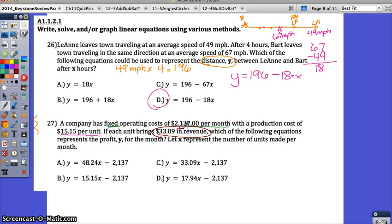If each unit brings $33.09 in revenue, which of the following equations represent the profit Y for the month? The money that's coming in, the revenue, is a positive number. But you have to think about what's going out. They're going to have to pay this fixed fee every month and the cost per unit. Remember that profit equals revenue minus cost. So we're trying to find an equation profit for Y.